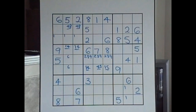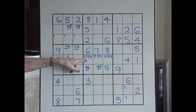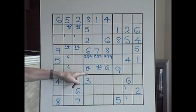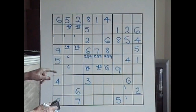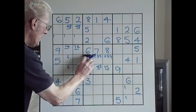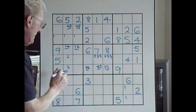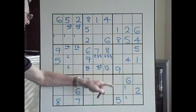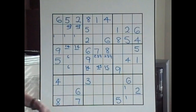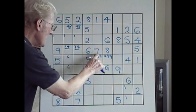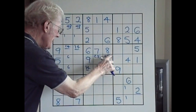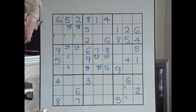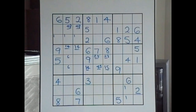Look at this cell here. Is there a two, three, nine in the column? Yes, there is. That means the two's gone, the three's gone — we're left with a nine. Nine. And that fits because we have a top, middle, and a bottom. So we can now eliminate that nine and eliminate that nine, and that leaves us with a two-three matching pair. Fantastic.